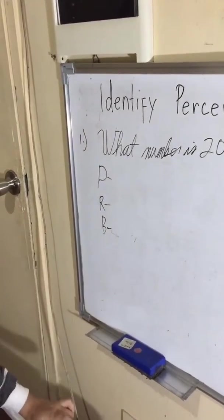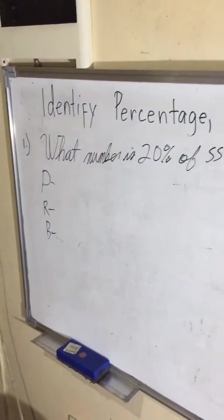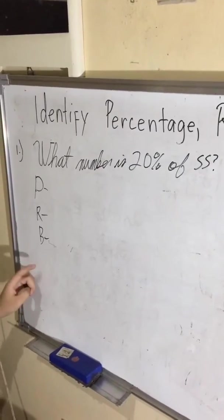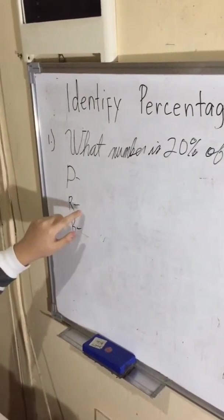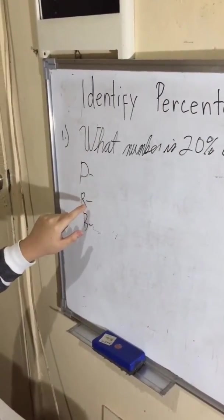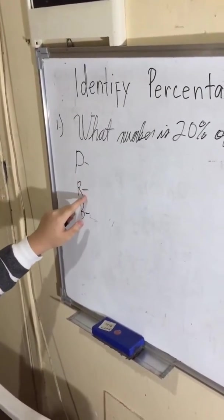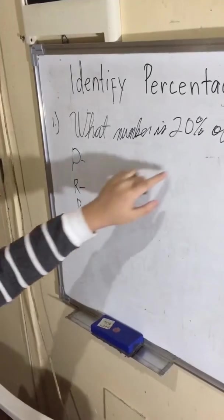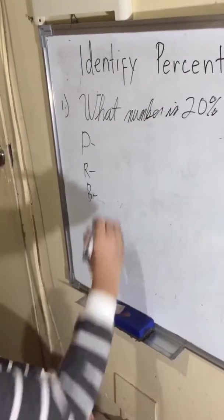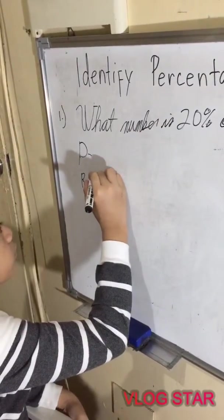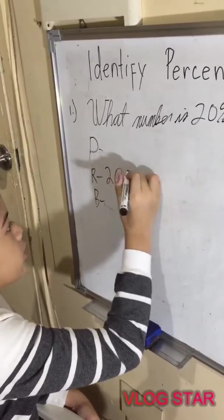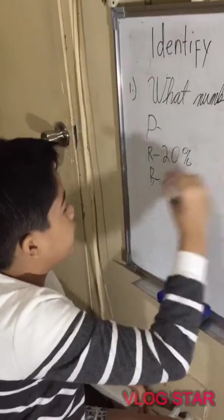The percentage would be the one that we need to find. So that you can easily know where the rate is, the rate would be the number with the percent sign next to it. So the rate would be 20% and the base is 55.